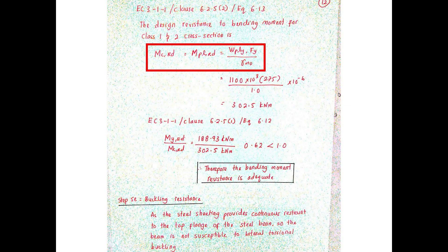Based on EC3, clause 6.2.5(1), equation 6.13, the design resistance to bending moment for class 1 and class 2 cross-section is calculated based on the equation shown in the red box.